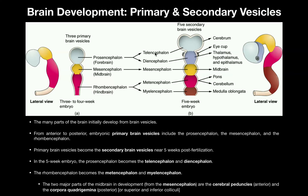Another thing — not true for the first two, but for the last three which all start with an M: the last three are technically in alphabetical order. S comes before T, and Y comes after E. So in alphabetical order you have mesencephalon, metencephalon, and then myelencephalon. Telencephalon and diencephalon are out of order, but this alphabetical trick can help you with the last three.